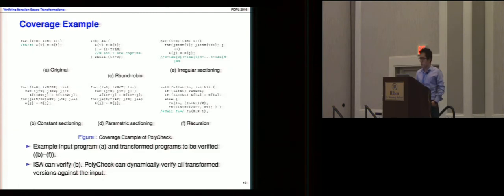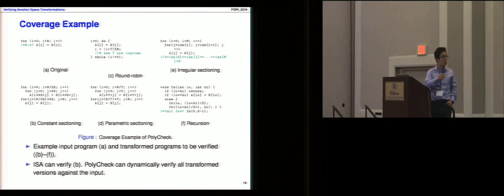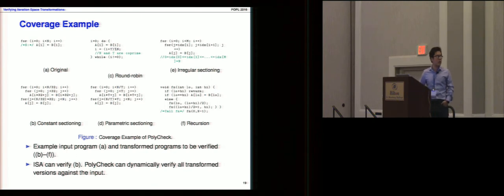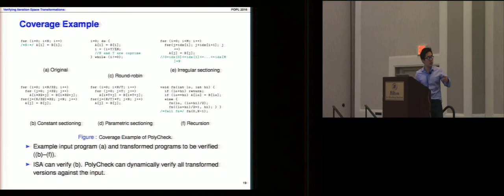I would like to show the coverage examples our tool can handle. The first program is the original array copy, and the others are transformations generated by tools or by hand. The ISA tool can only verify fixed tiling, but our tool can handle all of them, including recursive decomposition transformation.